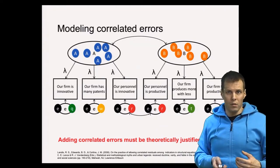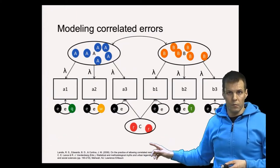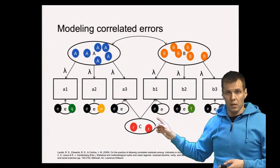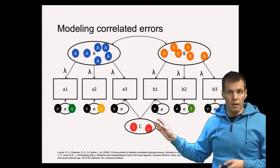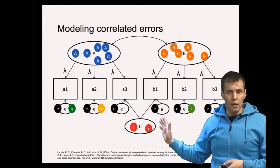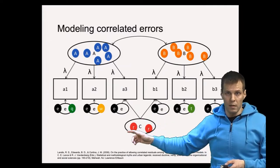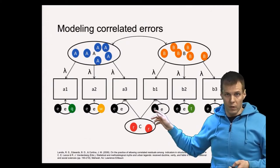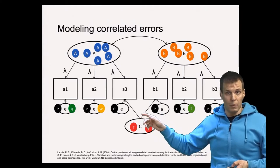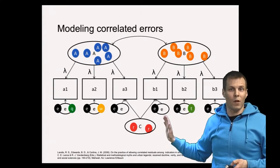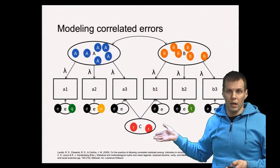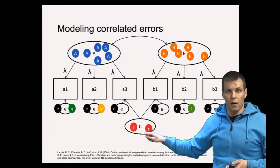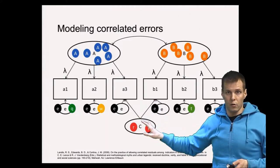Another — perhaps better — way to accomplish the same thing is to specify a secondary factor. Instead of saying these two error terms are correlated, we can say that indicators A3 and B1 actually also measure something else, and we add a secondary factor. This is a more appealing approach because it forces you to explicitly interpret what the factor means. It's much easier to free correlations without explaining their interpretation than to add a factor, which reviewers will ask you to explain. So it's a good idea to use the secondary factor instead of the error correlation. Mathematically, both approaches accomplish exactly the same thing: they allow the unique shared aspect of A3 and B1 to escape from the error terms.